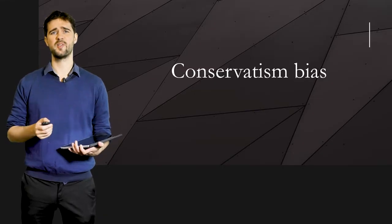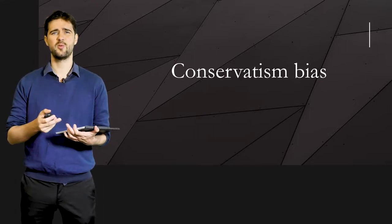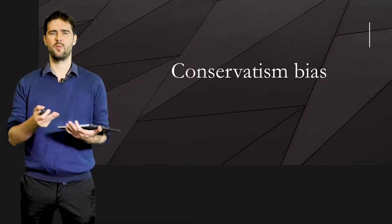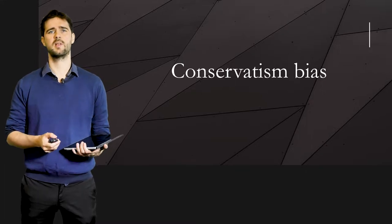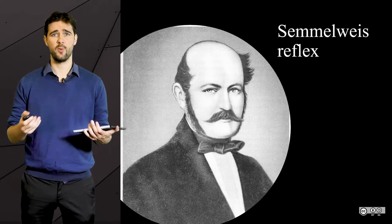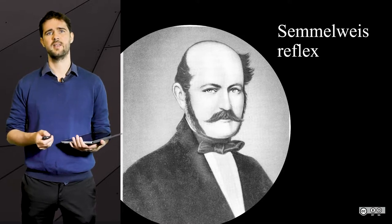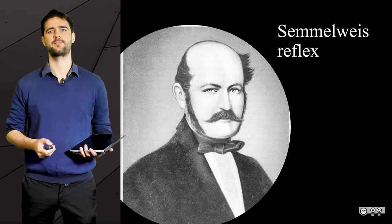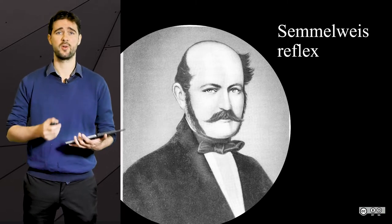Conservative bias corresponds to the reluctance people have when they need to revise their beliefs when they are presented with new evidence. A historical example given in classes all over the world is the case of a physician called Semmelweis, that gave his name to what we call the Semmelweis reflex, which is also often used to refer to conservatism bias.